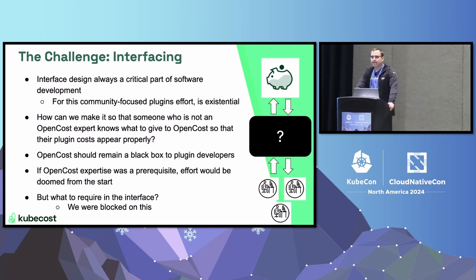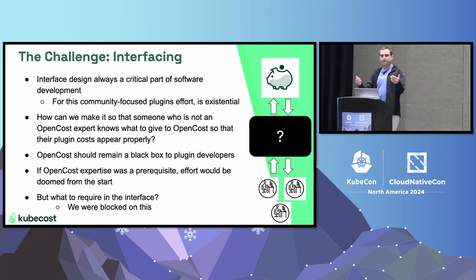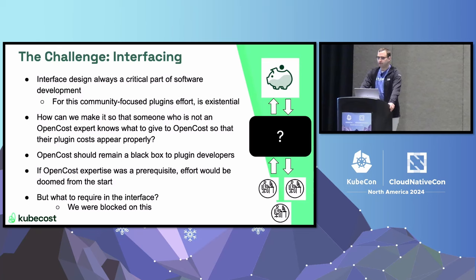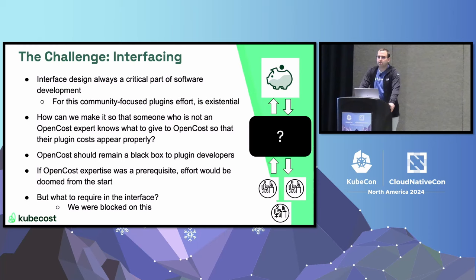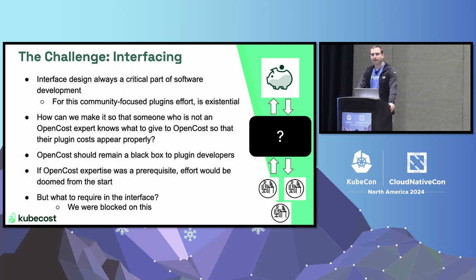Our biggest challenge identified in this paradigm was the interface. As we all know, interfaces are always an important part of software development. But in general, if it's an internal project, you can gather around a table and hash things out. We don't really have that here — we're in the paradigm of all being in different locations all over the world, in different companies. So having a good interface is, frankly, an existential risk. If we required everyone to be an expert in OpenCost to contribute, we would be doomed. Ideally, it's a black box — you write the plugin, you process the cost you care about, and you don't worry about the rest.